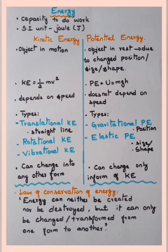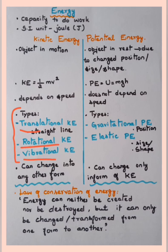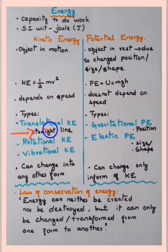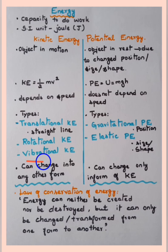Potential energy does not depend on the speed of an object. Kinetic energy has mainly three forms: translational kinetic energy, rotational kinetic energy, and vibrational kinetic energy. Translational kinetic energy is when the object moves in a straight line. Rotational kinetic energy is when the object moves in a circular path. Vibrational kinetic energy is the energy possessed by an object due to its vibration.